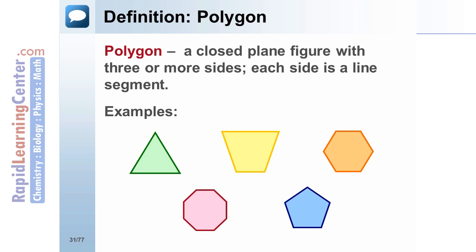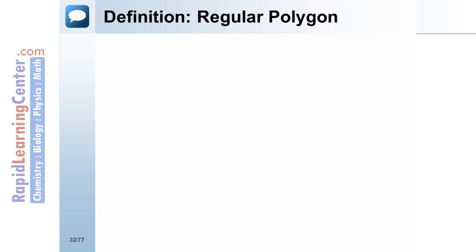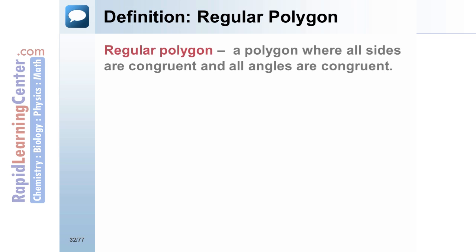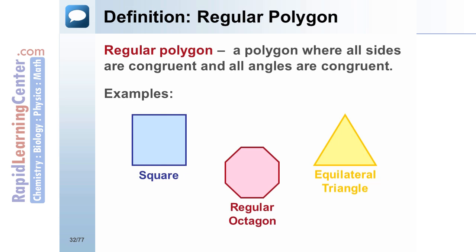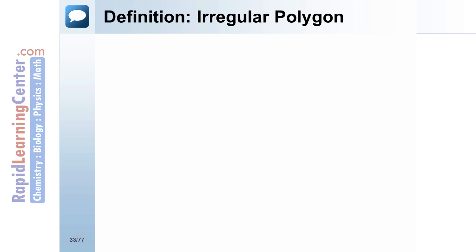A regular polygon is a polygon where all sides are congruent and all angles are congruent. Examples of regular polygons include the square, equilateral triangle, and a regular octagon like a stop sign.